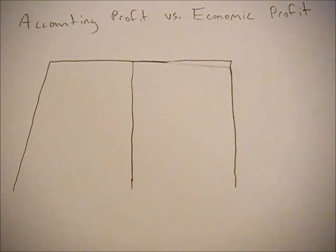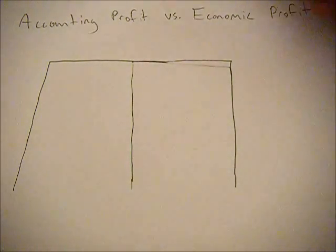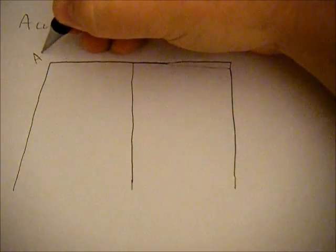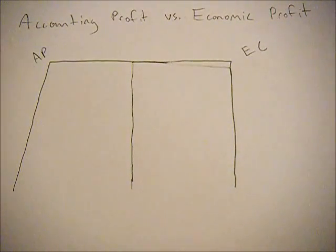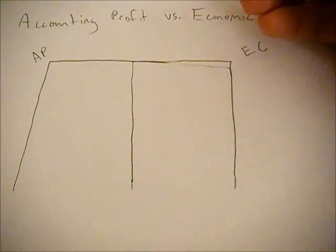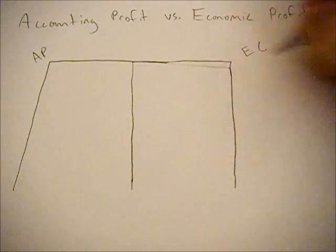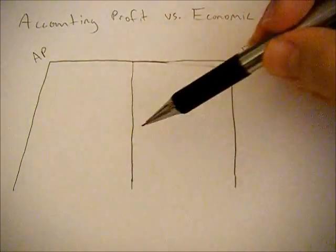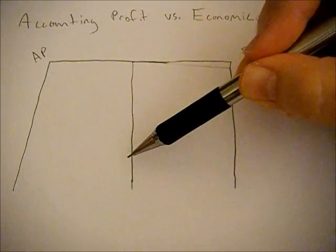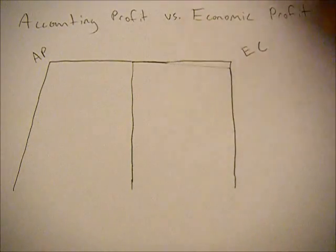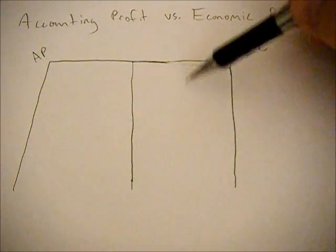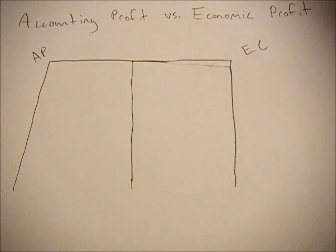This video is going to go over a brief example of accounting profit versus economic profit. These two bars I've drawn here are going to show what our accounting profit is and what our economic profit is under the exact same scenario. Total revenue is at the top, and then we have costs — either explicit costs, implicit costs, or opportunity costs — that will fill this up. The remaining part will be accounting or economic profit.